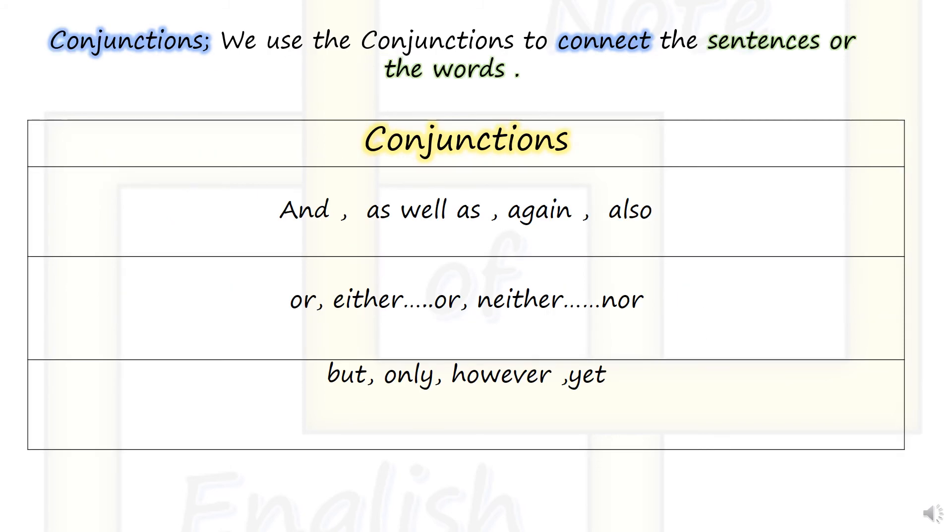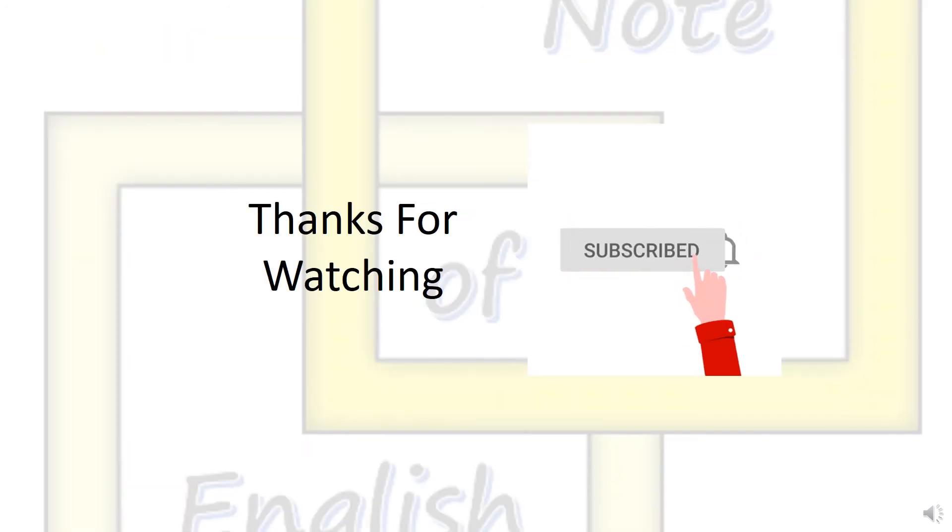Conjunctions. We use conjunctions to connect the sentences or the words. Conjunctions include: and, as well as, again, also, or, either...or, neither...nor, but, only, however, and yet.